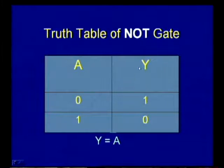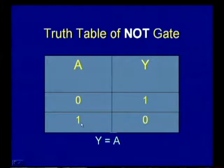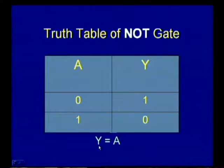The truth table of NOT gate consists of input and output with their logical conditions. When the input is 0, the output is 1. The opposite is the case when input is 1, output is 0. The Boolean expression representation of this NOT gate is Y equal to A bar. This bar indicates inversion.